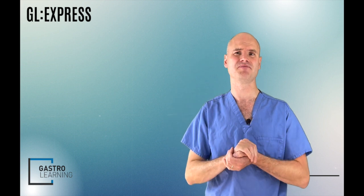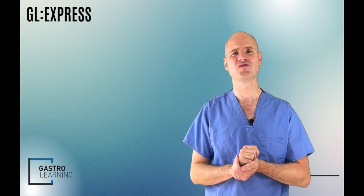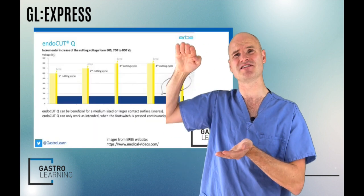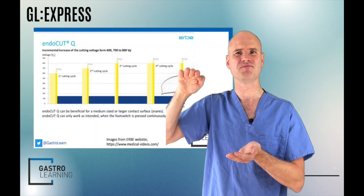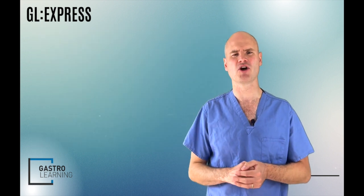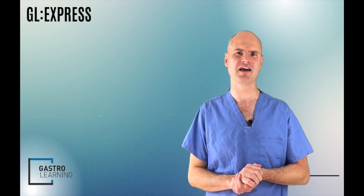The last thing I will say is that in Endocut I setting, there is no stepwise increase in the voltage. It stays at a constant level. So I hope this helped. We'll do another video on the coagulation settings, and I'll hand over to my colleague at some point and let him talk about the cutting and coagulation settings for ERCP work.